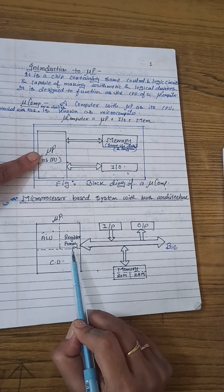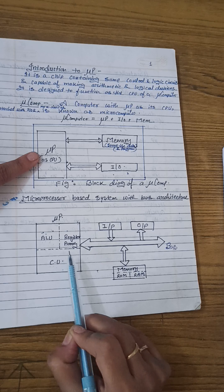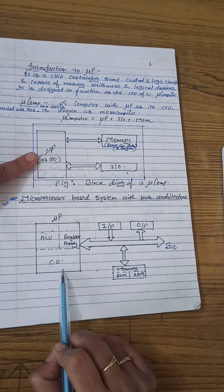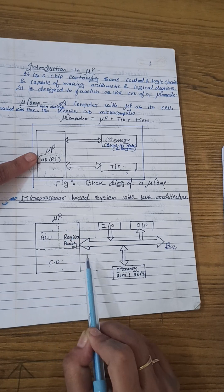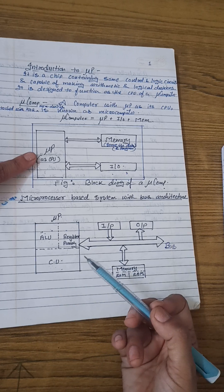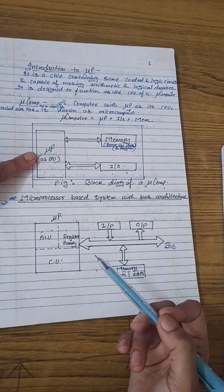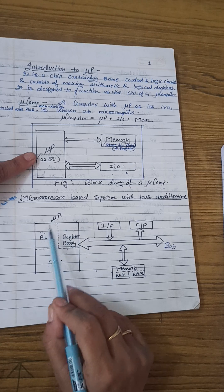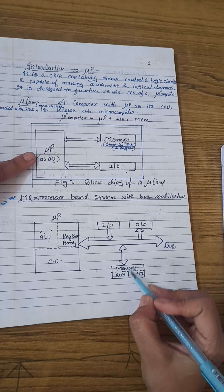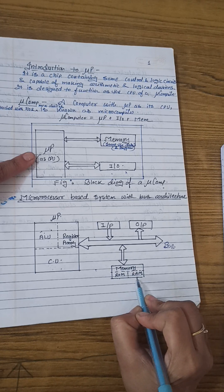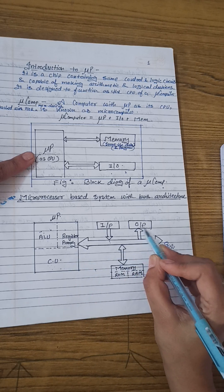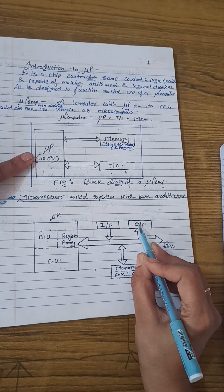Then, we need a register array. These register arrays are actually used by the CPU for the temporary purpose to store the data. Third one is the control unit, to control the overall functioning of the CPU — for example, which command is coming, how we are going to decode that command, what is the timing, how much the delay, etc. So, we need a control unit, and microprocessor contains all these three things inside. Then, the memory — it can be divided into RAM or ROM — then the I/O: the input device sends data towards the microprocessor, and the output device receives data from the microprocessor.